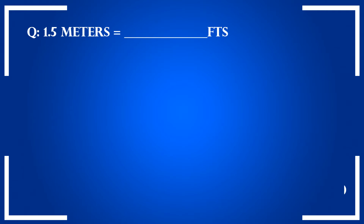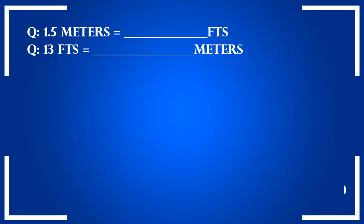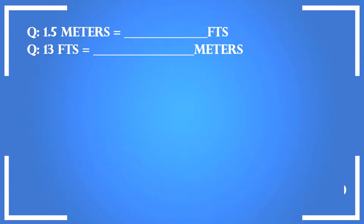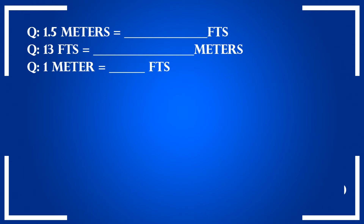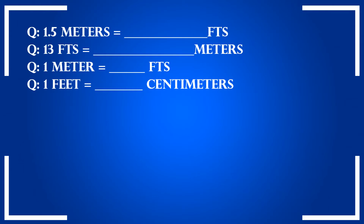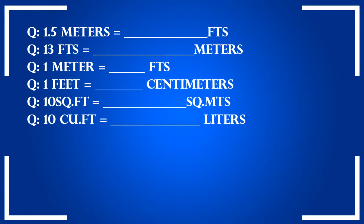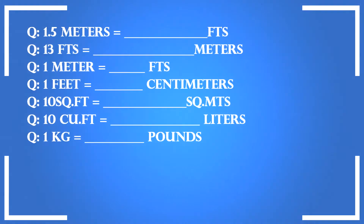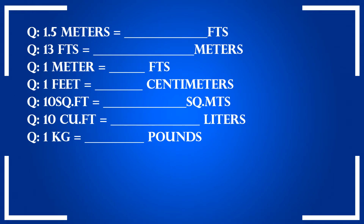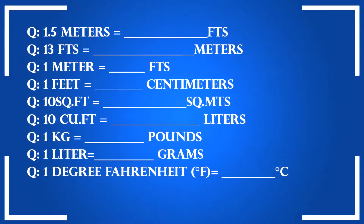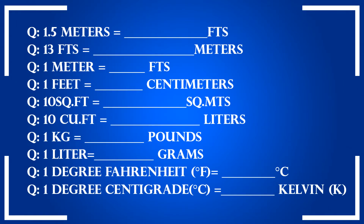Now you can start doing the conversions. 1.5 meters is equal to how many feet? 13 feet is equal to how many meters? 1 meter is equal to how many feet? 1 foot is equal to how many centimeters? 10 square feet is equal to how many square meters? 10 cubic feet is equal to how many liters? 1 kg is equal to how many liters? 1 kg is equal to how many grams? 1 degree Fahrenheit is equal to how many centigrade? 1 degree centigrade is equal to how many Kelvin?